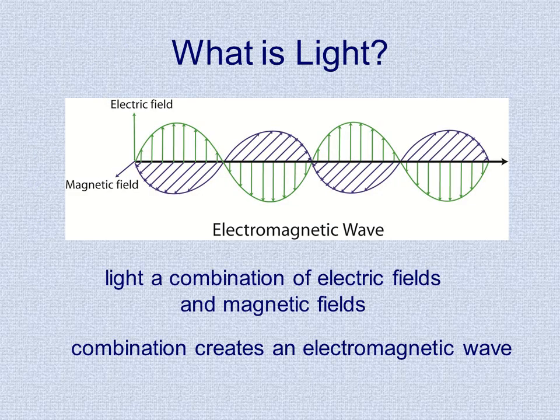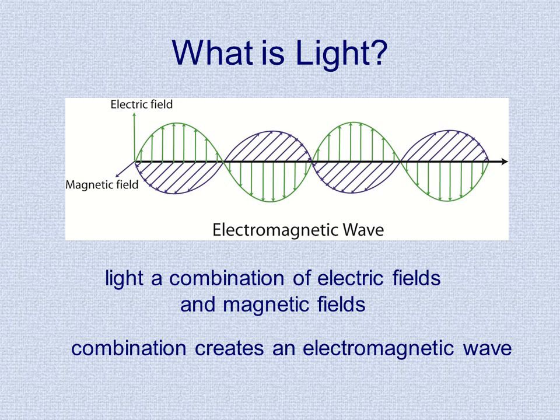Now, light is a combination of fields. Light is a combination of an electric field and a magnetic field. And so we get what's called an electromagnetic wave. A little hard to get a handle on, but this is what we're talking about. We're talking about waves.